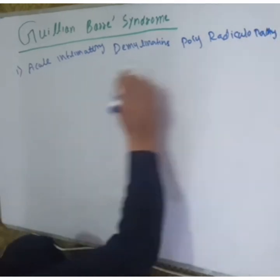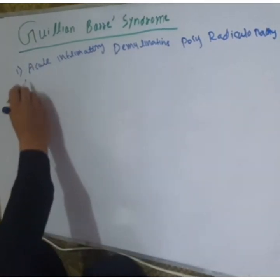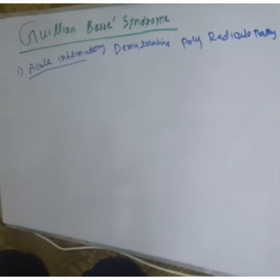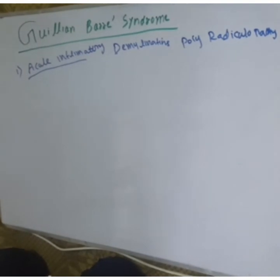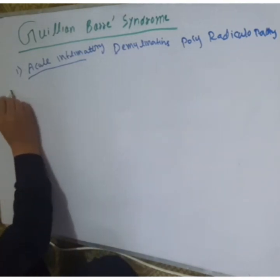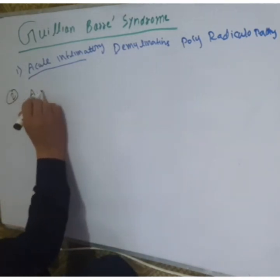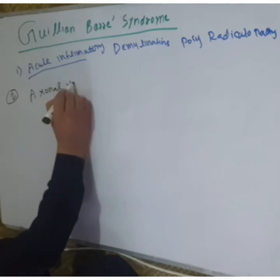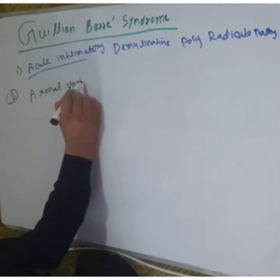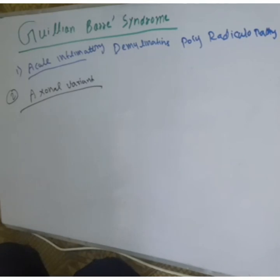This is the first type — there is acute inflammation. The second type is the axonal type of GBS. The axonal variant or axonal type has two subtypes.